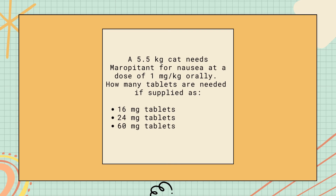Let's do some practice. If a 5.5-kilogram cat needs maropitant for nausea at a dose of 1 milligram per kilogram orally, how many tablets are needed if supplied as 16 mg tablets, 24 mg tablets, and 16 mg tablets? Solve it on your own and comment your answer in the comment box.